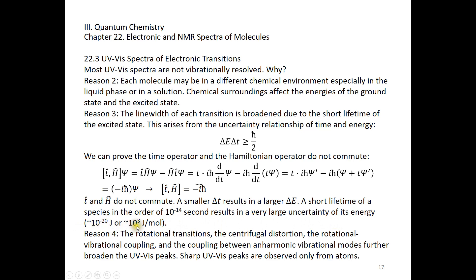The last reason is this: we have rotational transitions accompanied by some centrifugal distortion because those rotors are not necessarily rigid rotors. The radius of the rotation may change. And also there's coupling between rotations and vibrations. There are also coupling between anharmonic vibrational modes. All those further broaden the UV-Vis peaks. Sharp UV-Vis peaks are observed only for atoms.